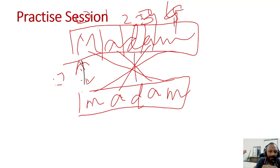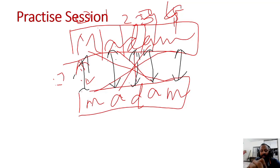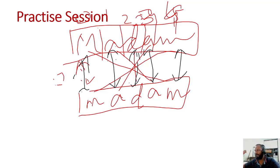Then we match - these two match here, here, here, here. फिर ये दोनों मैच कर रहे हैं, फिर ये दोनों मैच कर रहे हैं, और finally ये दोनों मैच कर रहे हैं। अगर ये पांचों मैच कर जाते हैं तो it is a perfect palindrome. अगर बीच में कहीं mismatch आ जाता है तो हमें बोलना पड़ेगा palindrome नहीं है। I hope this is very clear how we do palindrome checking.